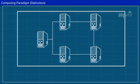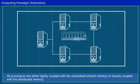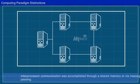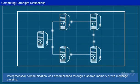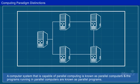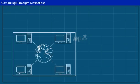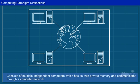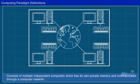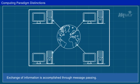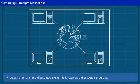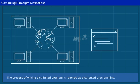Parallel computing: all processors are either tightly coupled with centralized shared memory or loosely coupled with distributed memory. Inter-processor communication is accomplished through shared memory or message passing. A computer system capable of parallel computing is commonly known as a parallel computer, and programs running on parallel computers are known as parallel programs. The process of writing a parallel program is referred to as parallel programming.